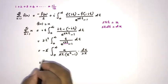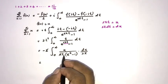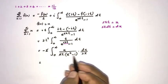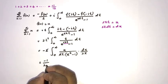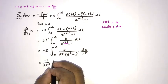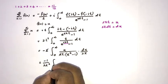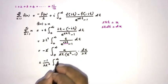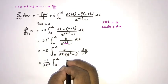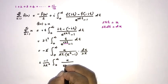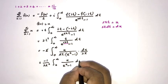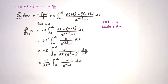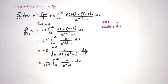After substitution, the 2's cancel and combining the 2π factors gives 2π². We can write this outside the integral sign as minus 1 over (2π²), times the integral from 0 to infinity of x over (e^x - 1) dx.